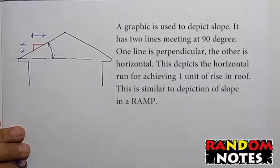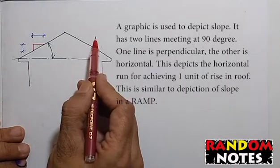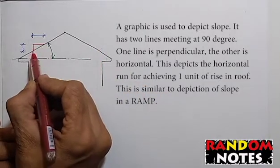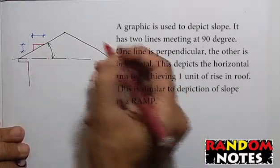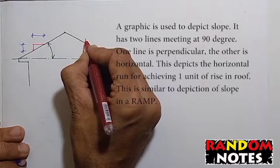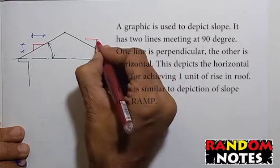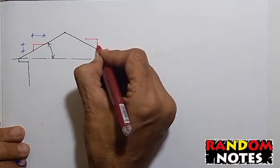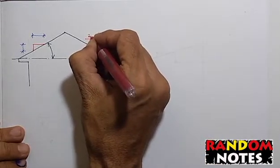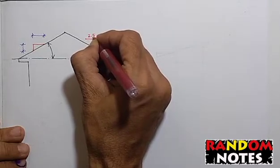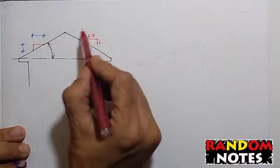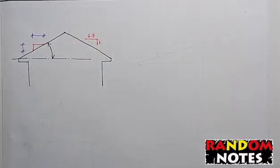On this side, let us draw the graphic again to understand the correct depiction. In correct depiction, this graphic does not touch the line of roof. Horizontal run for this much rise, that is 2.5 units of horizontal run for a rise of one unit. This is the correct depiction of slope and placement of its graphic.